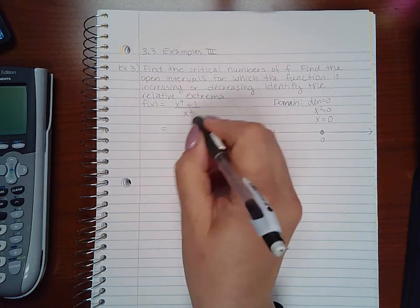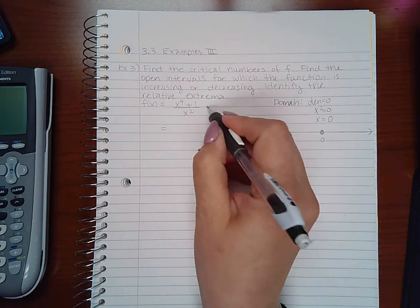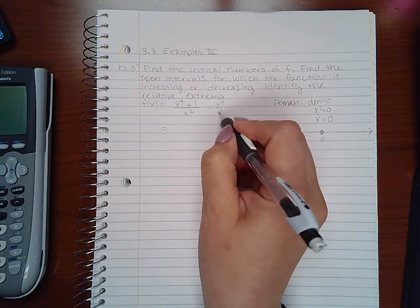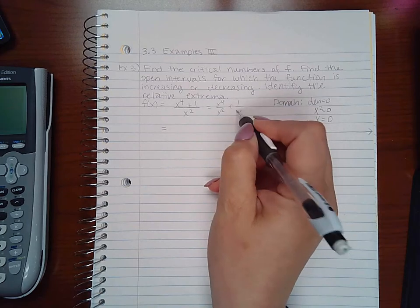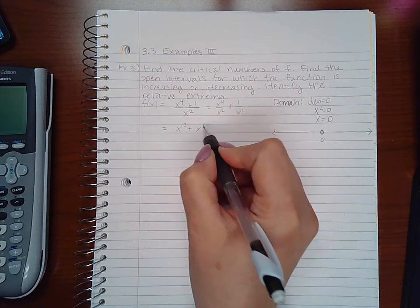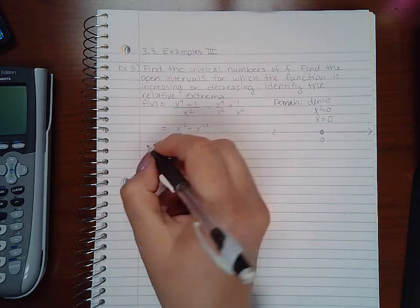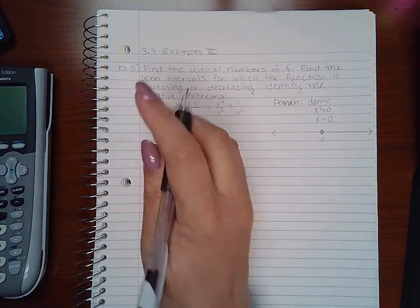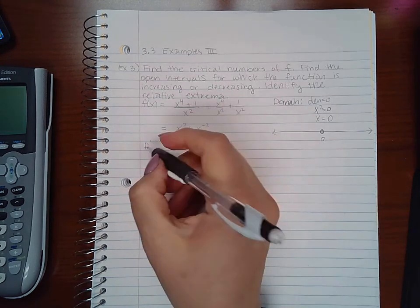Before taking the derivative, I'll rewrite this. Separating into x to the fourth over x squared plus 1 over x squared gives x squared plus x to the negative 2. Taking the derivative this way is a bit easier.